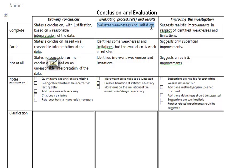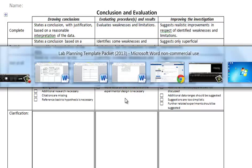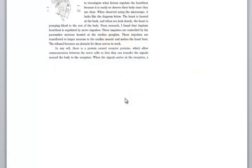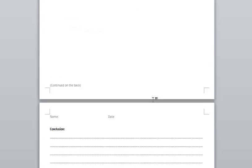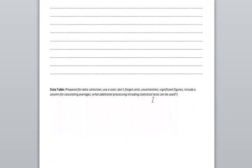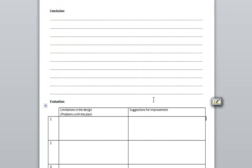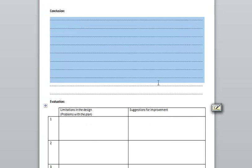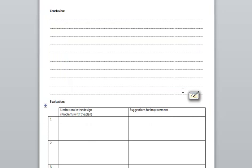We also have evaluates the weaknesses and limitations and suggests realistic improvements in respect to identified weaknesses and limitations. These two parts kind of go together, that's the big piece of evaluation. Flipping back and forth here to some of our examples, this is the template. After the data table, now we're here to the conclusion. The conclusion is just going to be a big chunk of information here.